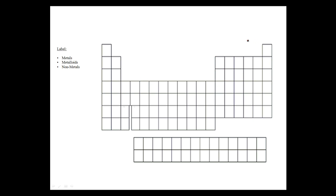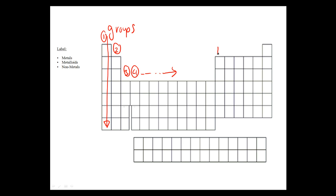The vertical columns on a periodic table are called groups. So this one would be group 1, this would be group 2, group 3, group 4, and so on — this would be group 13, 14, 15, 16, 17, and 18. On the other hand, horizontal rows on the periodic table are called periods — period number 1, period number 2, period number 3, period number 4, period 5, period 6, and period 7.